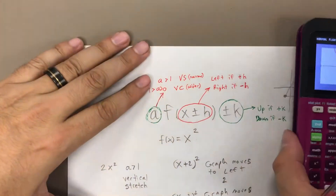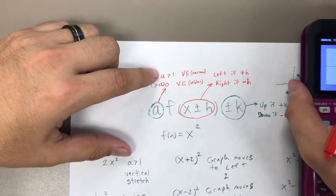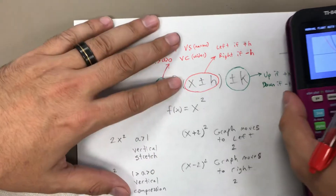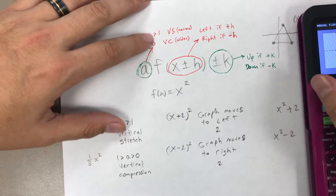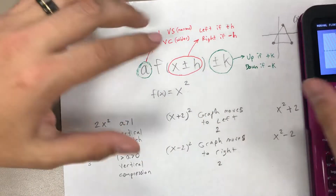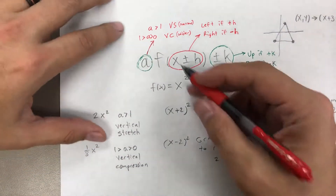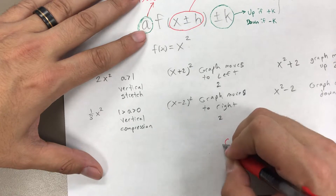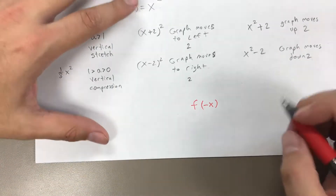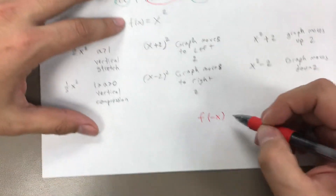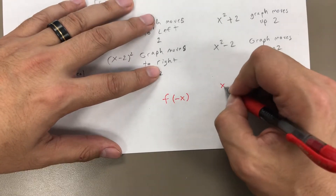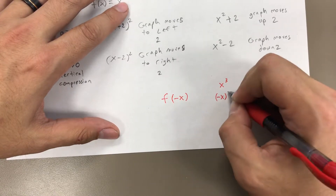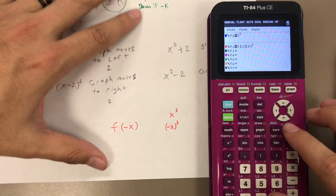There's one last thing to talk about, and that's reflections. Reflections happen when we use negatives on either the function itself or on the x value. I'm going to switch from x squared to a different function — let's use x to the third power as our parent function. If I put a negative on the x value inside the parentheses, so (negative x) to the third power, let's see what happens when we graph those.